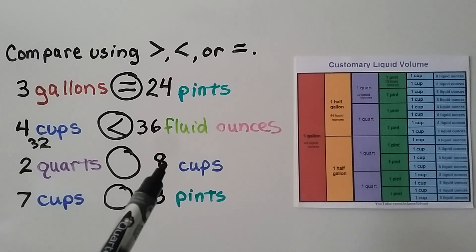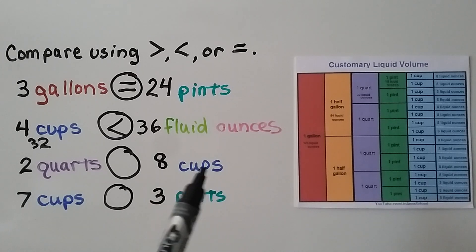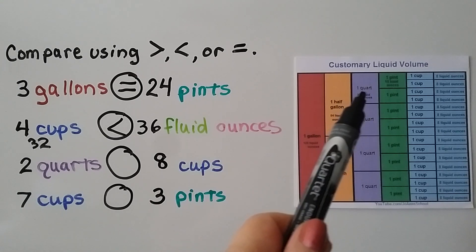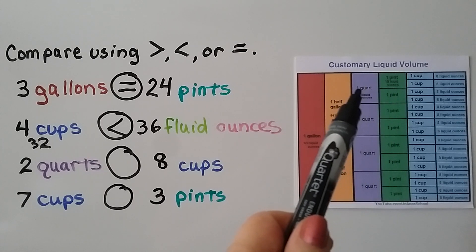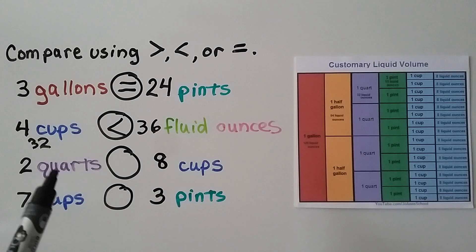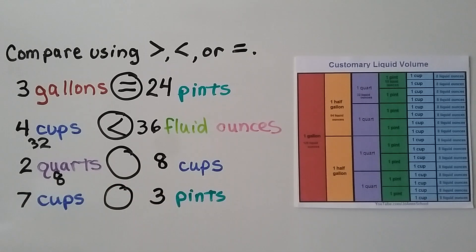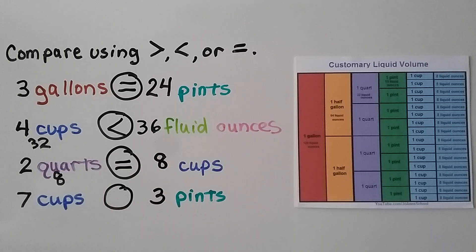Two quarts compared to eight cups: let's turn the quarts into cups. There are four cups in one quart, so there are eight cups in two quarts. We're comparing eight cups to eight cups — that's equal. Two quarts is equal to eight cups.